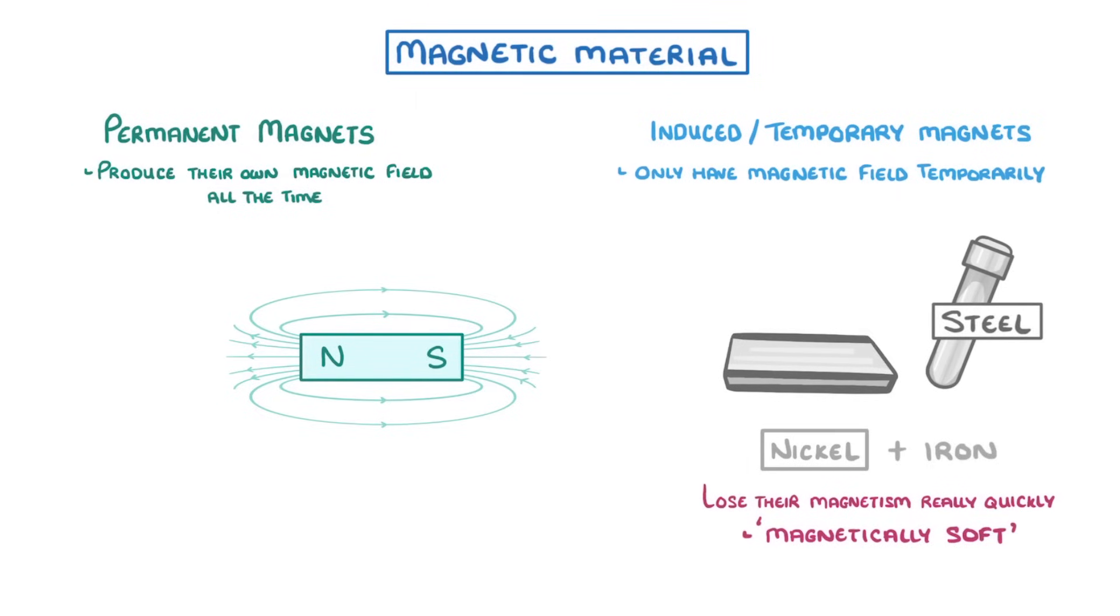Others though, like steel, lose it more slowly, and we call these ones magnetically hard materials.